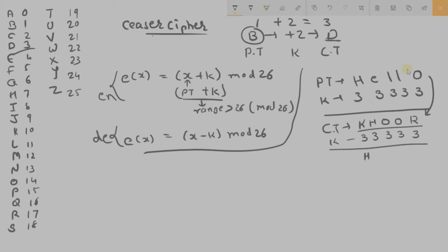H, 7, minus 3, 4. 4 stands for E. So we will get E. O, O is 14, minus 3, 11, L. O minus 3, 11, L. R, 17, minus 3, 14, we will get O.